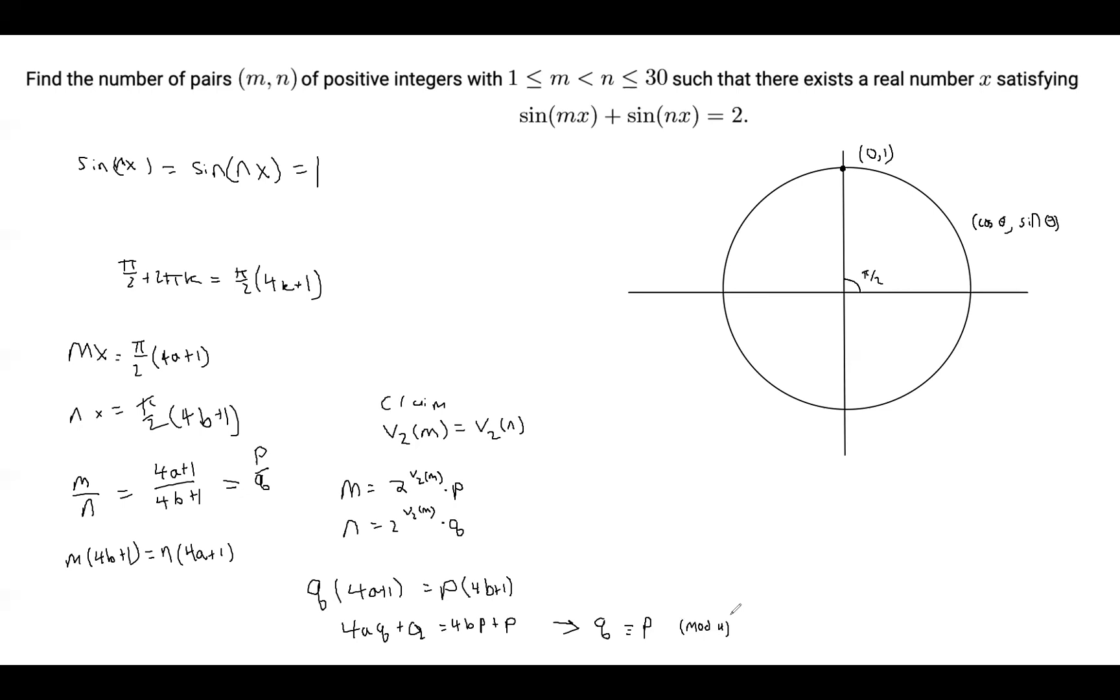So we can essentially split the numbers from 1 to 30 into several groups: {1, 5, 9, 13, 17, 21, 25, 29}. Then we have the group {3, 7, 11, 15, 19, 23, 27}. Then the next group is {2, 10, 18, 26}. And the next group is {6, 14, 22, 30}. And then we have the group {4, 20}, and then {12, 28}, and 8 by itself and 24 by itself and 16 by itself.